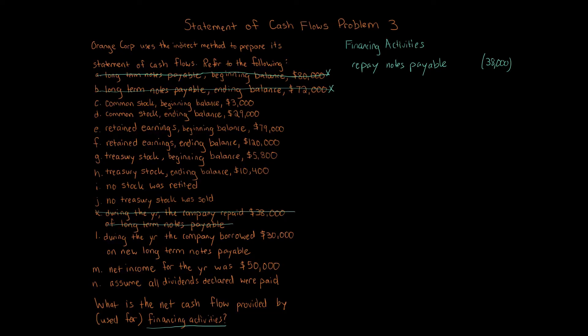Looking at L: during the year, the company borrowed $30,000 on new long-term notes payable. When you borrow money, that's going to increase cash because now you have $30,000 more cash than before. So that is an increase to cash of $30,000. Those are all the liabilities — we can eliminate that item and move on.